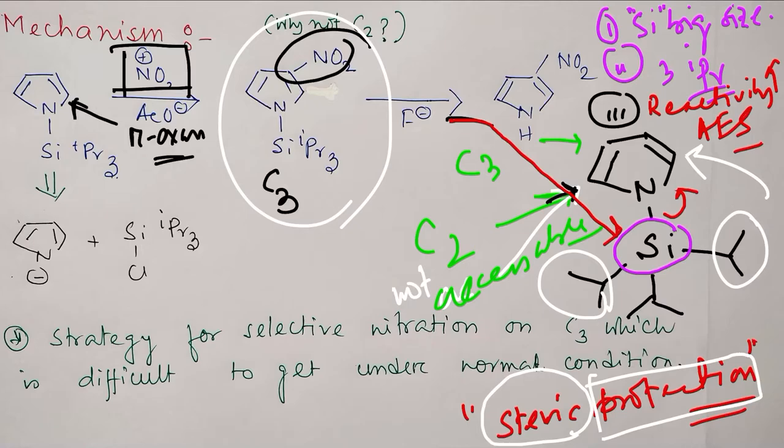In the second step with fluoride, the fluorine attacks the silicon center and this mechanism is AN plus DN: addition of nucleophile followed by departure of nucleofuge. After protonation, it produces three-nitro pyrrole. This is the answer.